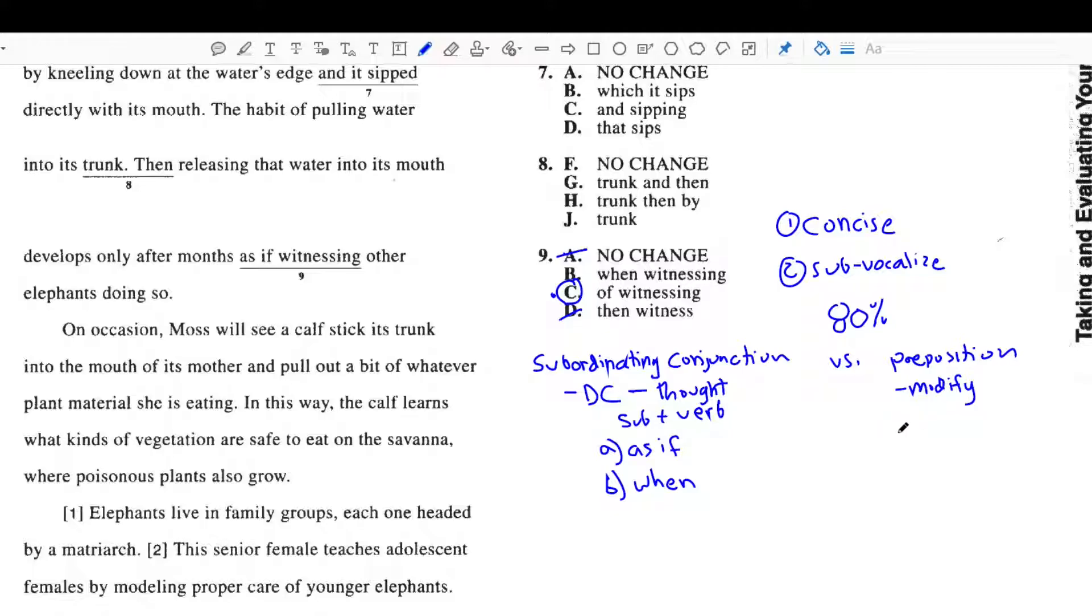Now, answer choice C. The word of signals I'm starting a preposition. Now, D, this is an adverb. And, we can just get rid of that right away because it doesn't make any sense. And, like I said, some of these answers just won't make any sense. So, this isn't even part of the discussion. What we're really trying to do here is figure out what the difference between subordinating conjunctions and prepositions are and why we would use one over the other.